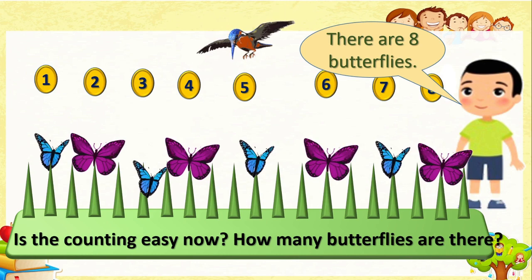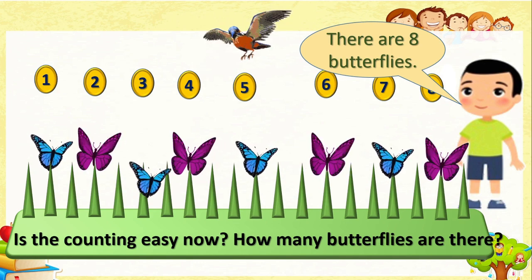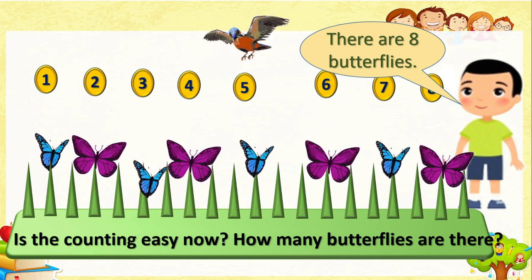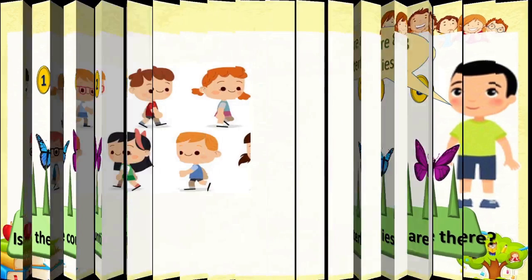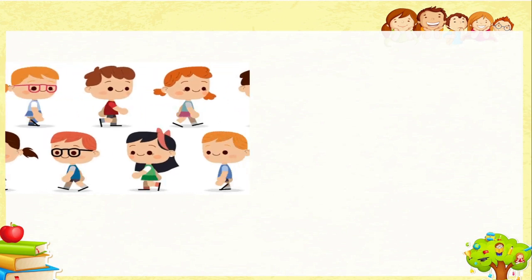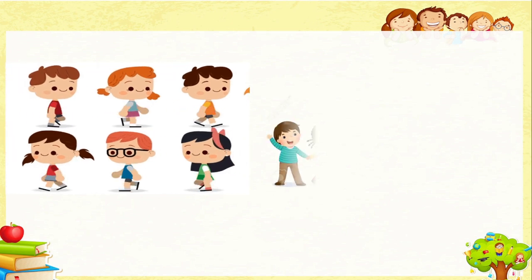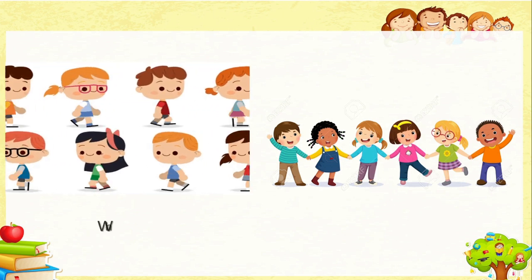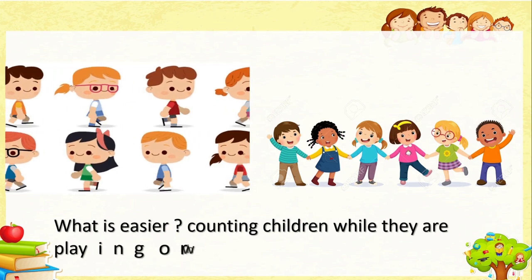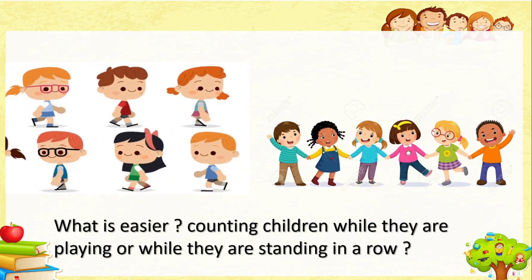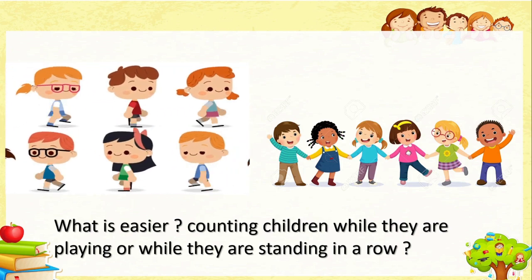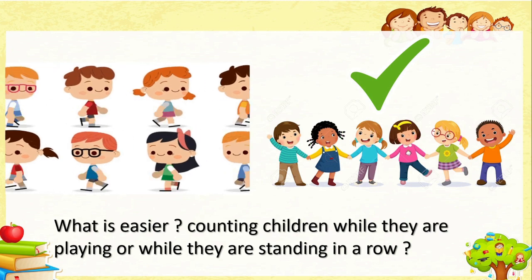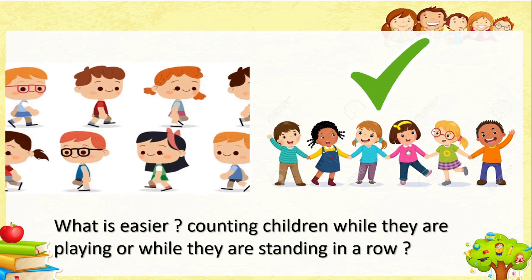By this counting, we came to know that if objects are in a row, we can count them properly, easily and perfectly. Here you can see children moving and playing, and here children are standing in a row holding their hands. Counting children while they are standing in a row is easier than counting while they are moving.